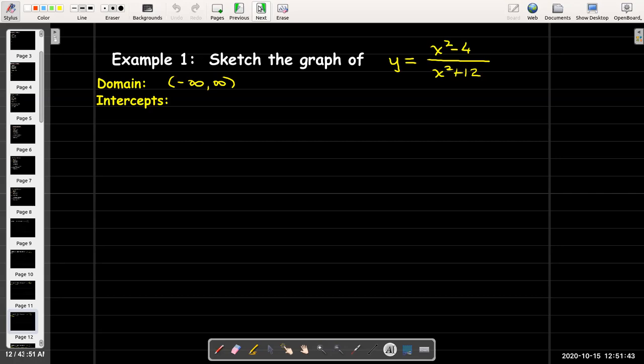For the intercepts, if x is zero, I'll be left with y equals negative one-third. And if y equals zero, a fraction can only be zero when the top is zero and the bottom is not zero. That happens when x is plus or minus two. So our x-intercepts are (2, 0) and (-2, 0).